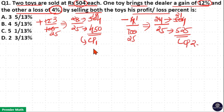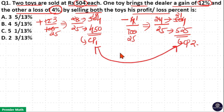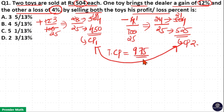CP1 plus CP2 equals total cost price. Total CP = 450 + 525 = ₹975.